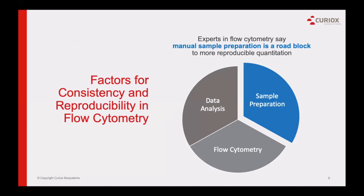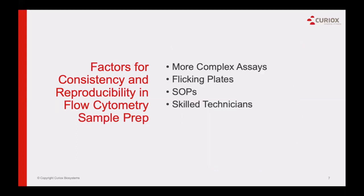There has been tremendous effort in the flow cytometry community to standardize workflows and produce robust flow data that can be compared independent of operator, time, and location. A recent review paper discussed standardization of flow to achieve consistency and reproducibility. The three major components are data analysis, the flow cytometry instrument itself, and sample prep. We have achieved much progress in two of the three areas — data analysis and flow cytometers — but sample prep remains the most challenging component.